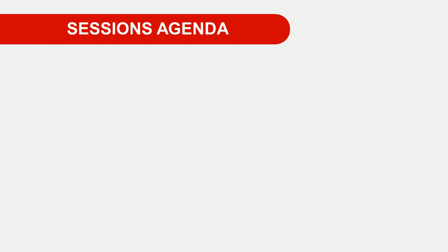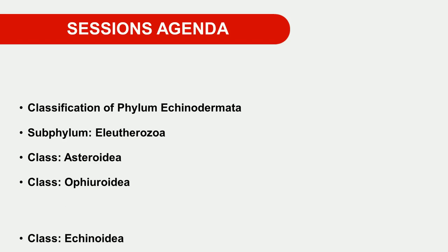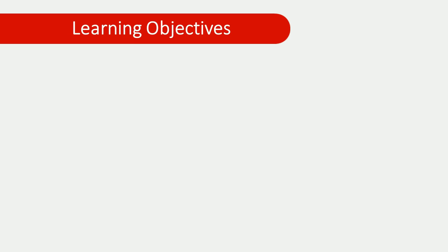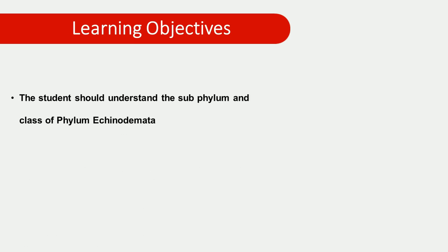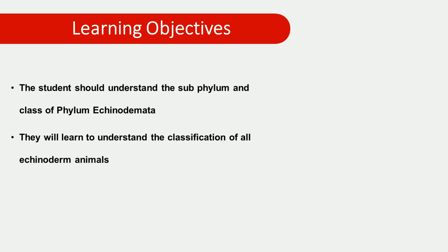Today we discuss the classes of Phylum Echinodermata. Specifically we discuss the subphylum Eleutherozoa. Both classes belonging to Eleutherozoa include class Asteroida, class Ophiuroidia, and class Echinoidia — these three classes with their examples we discuss in today's session. In this session you will understand which subphyla belong to Echinodermata and how many classes belong to each specific subphylum, and how Echinoderm animals are classified into various groups.